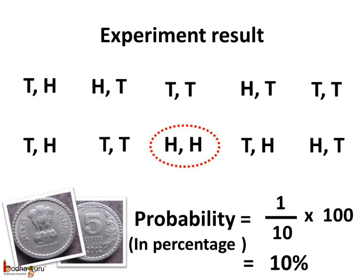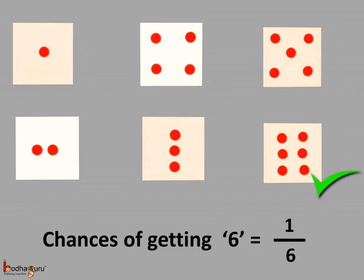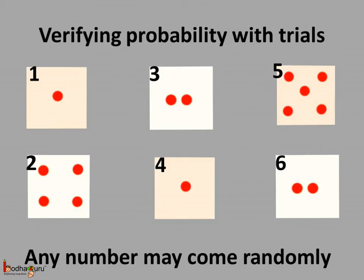Remember, probability refers to chances. If we throw a dice, the probability that six comes would be 1 out of the 6 chances theoretically. But, six may not come every once in six trials and again six may come twice or thrice. Any number may come randomly.